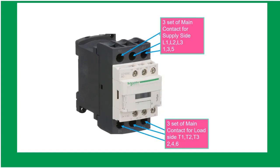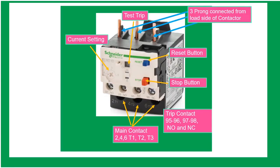A contactor has three main sets of contacts: for the supply side — Line 1, Line 2, Line 3, also labeled 1, 3, 5 — and for the load side going to the motor — T1, T2, T3, also labeled 2, 4, 6. The overload relay is always part of the magnetic contactor and is designed to protect the motor against prolonged overcurrent. If the motor runs too long with high current, it will overheat and be destroyed.